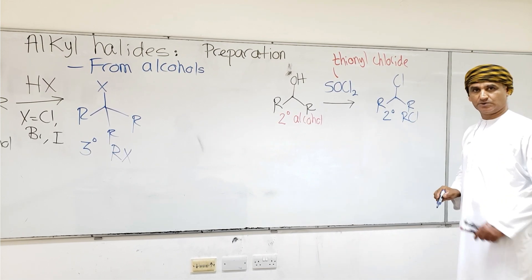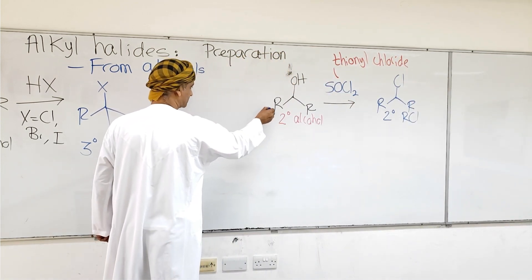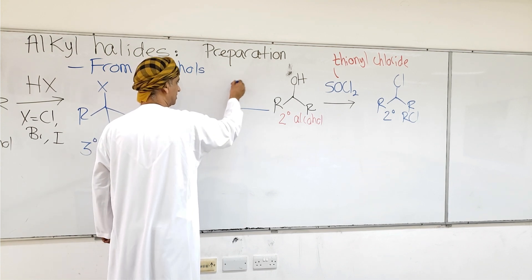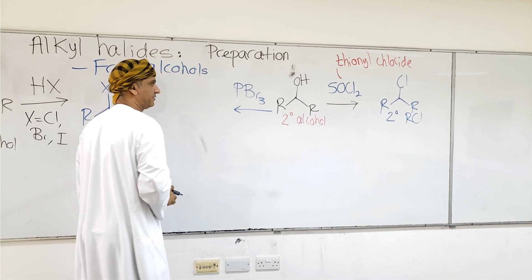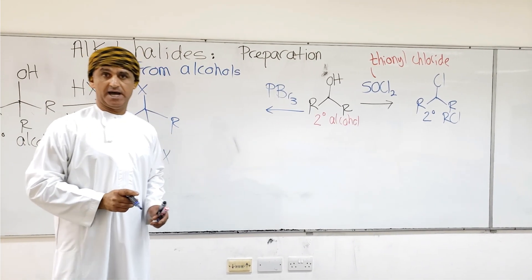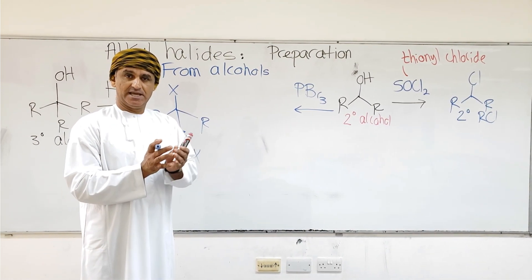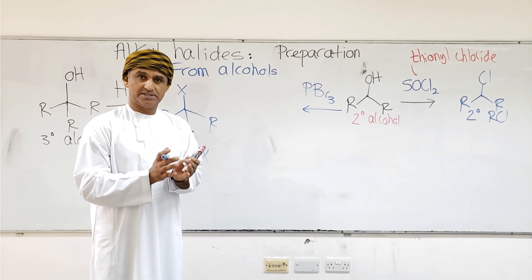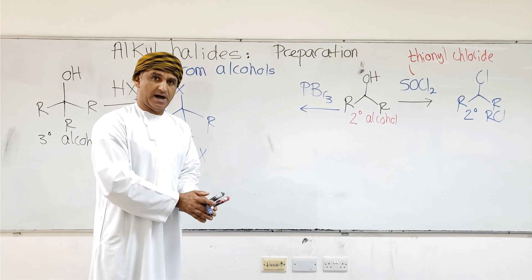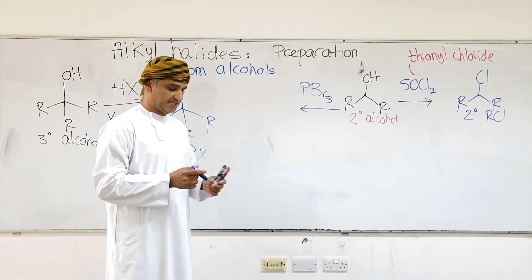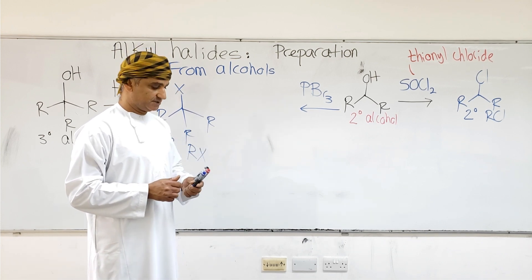Secondary alcohols can also react with PBr3, phosphorus tribromide. Phosphorus tribromide is a brominating agent that is used to convert alcohols into alkyl bromides. So the secondary alcohol is converted to the secondary alkyl bromide using phosphorus tribromide.